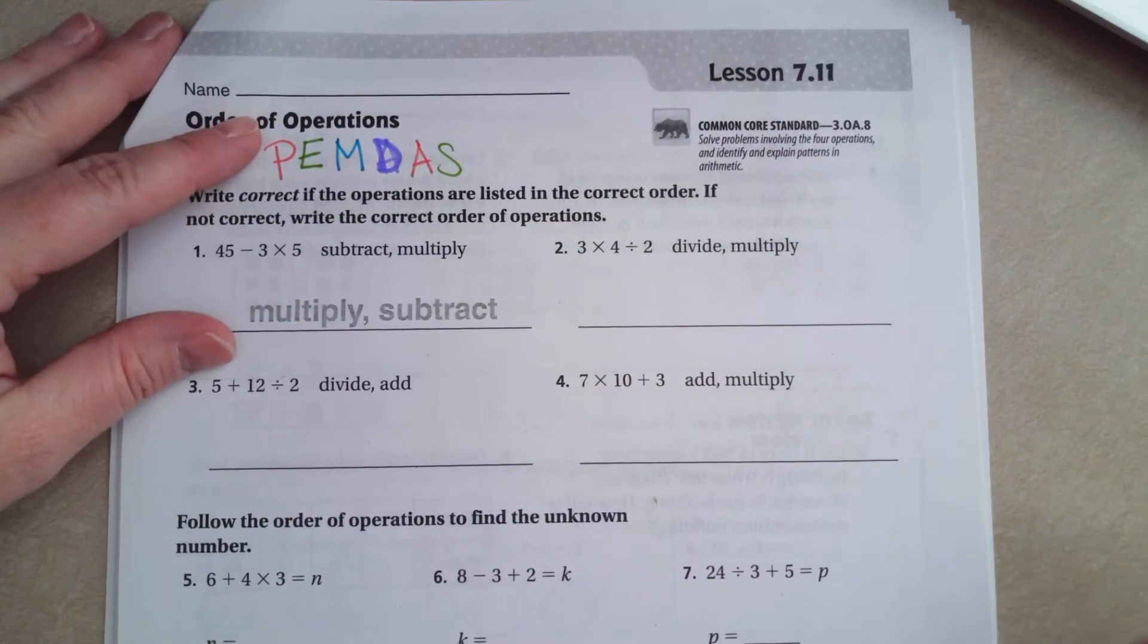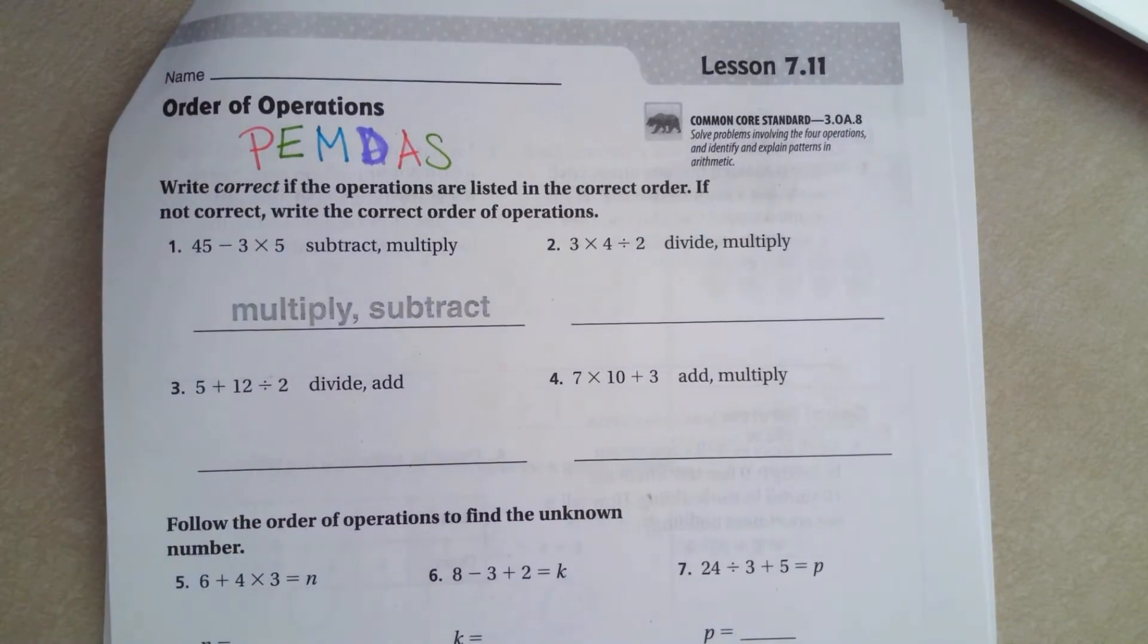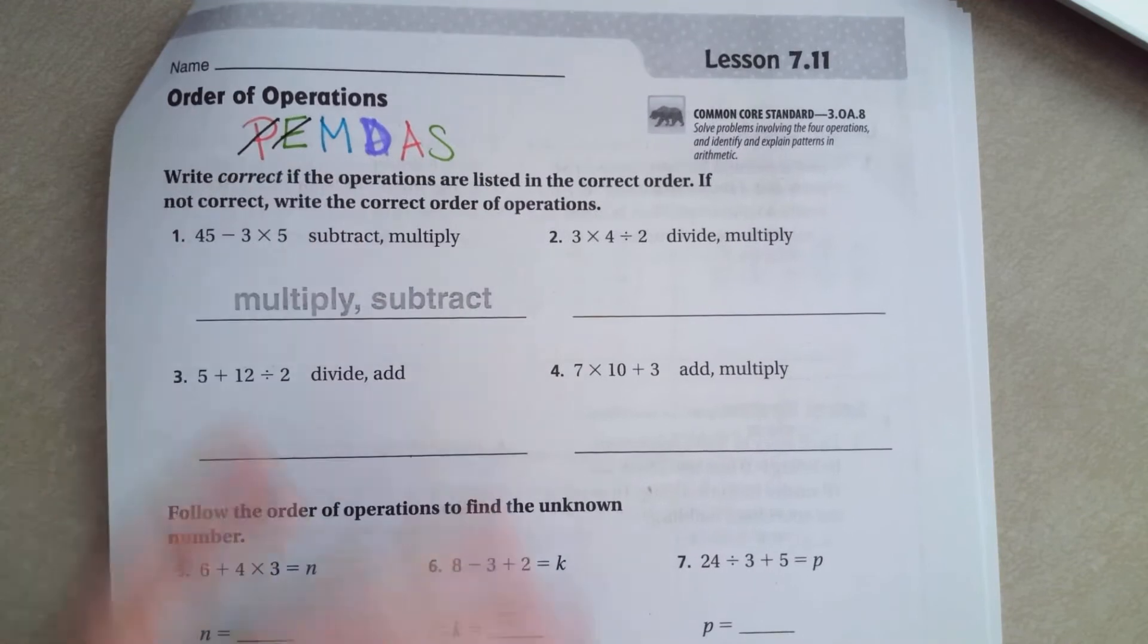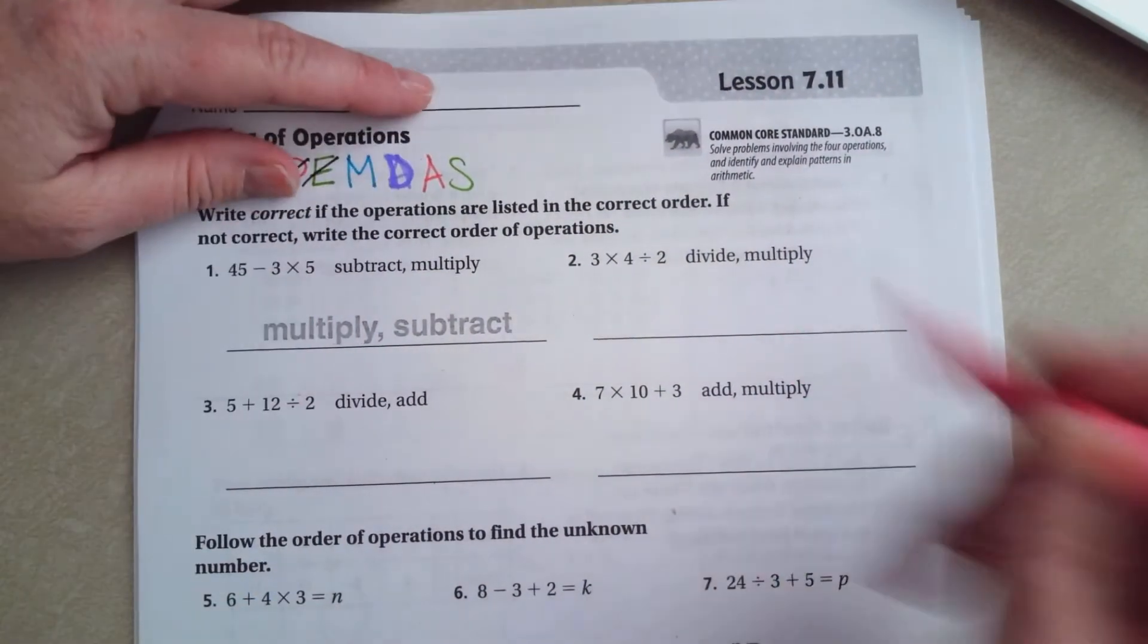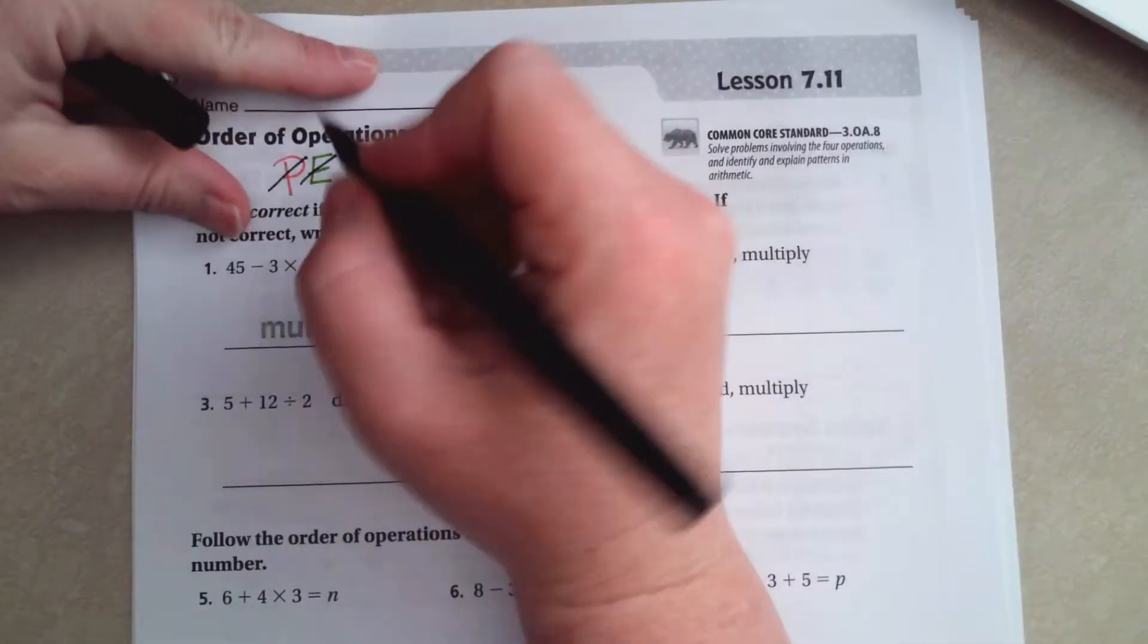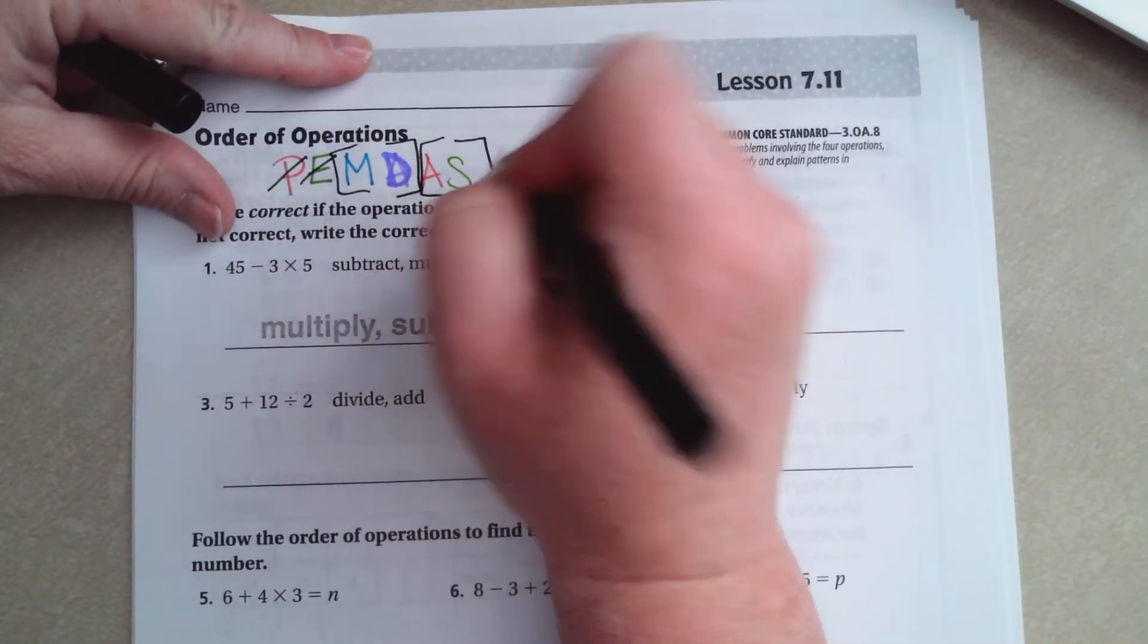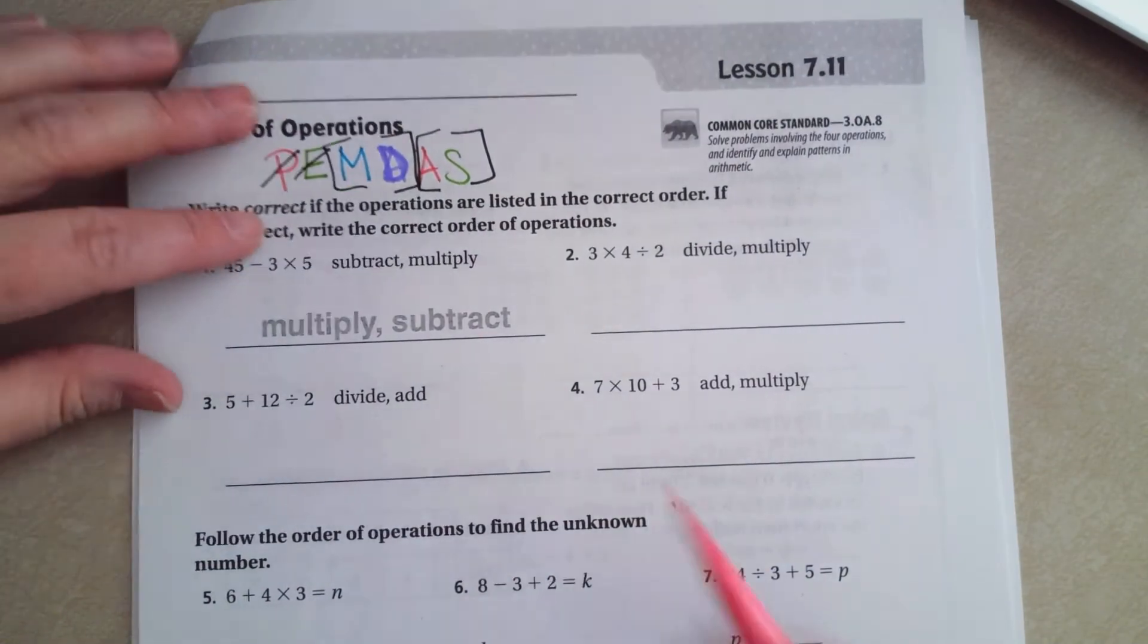In these we don't have any parentheses and we don't have any exponents so I'm just going to go ahead and cross those off because that means that all we're dealing with now is multiplication, division, addition and subtraction. When you are doing multiplication and division you do whichever one comes first. Same thing with addition and subtraction. Whichever one comes first in the problem, but they go together.